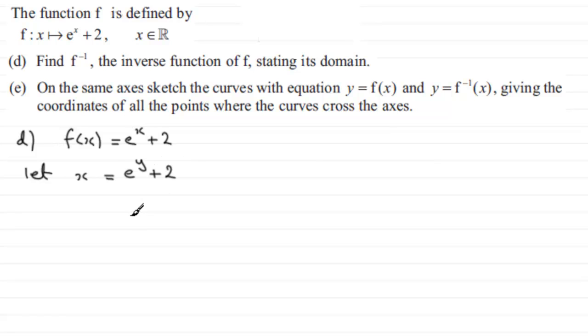Now we have to rearrange this to make y the subject. We would first take two from both sides, so x minus two would equal e to the power y. I'm going to change that round as e to the y equals x minus two. To work towards getting this y, because it's a power, we would take logs to both sides, natural logs in fact.